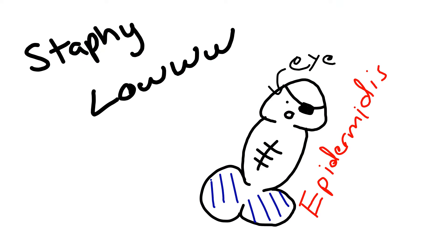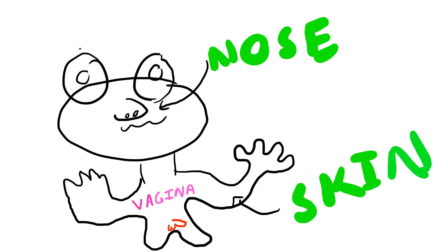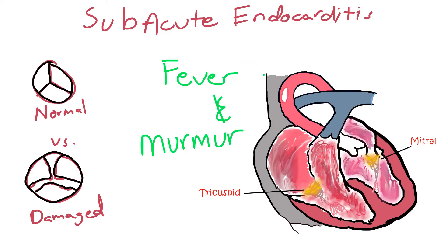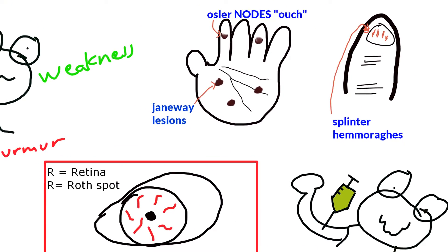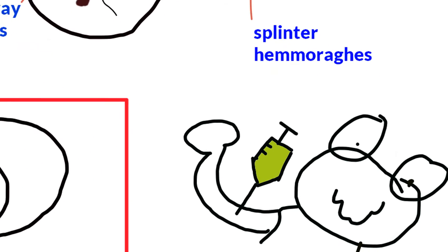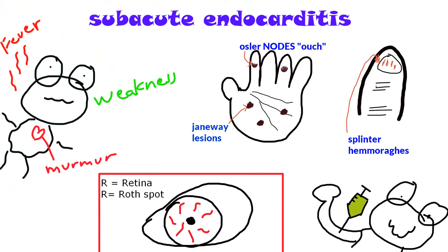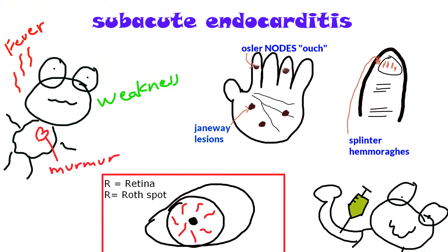Staphylococcus epidermidis lives all around our skin, nose, and vagina. The main thing we have to worry about is subacute endocarditis, because it has a high mortality rate of 30% within the first year — it can get pretty bad, damaging the heart valves. This usually comes from catheter infections, such as IV drug users or diabetics injecting insulin, essentially introducing skin-flora bacteria directly into the bloodstream.